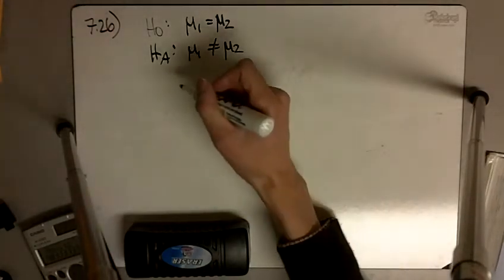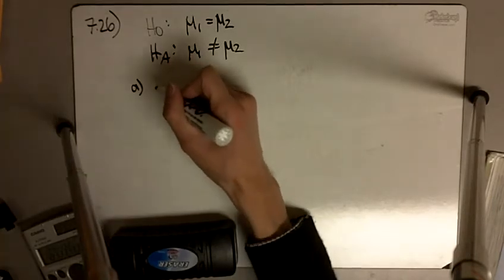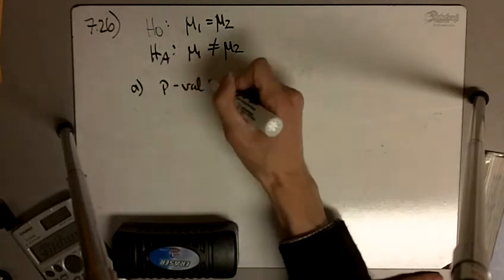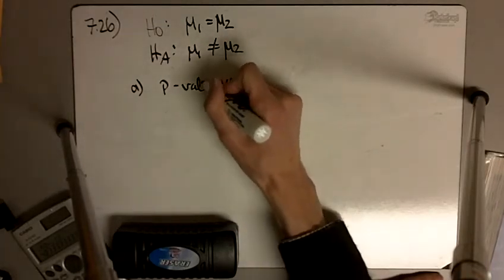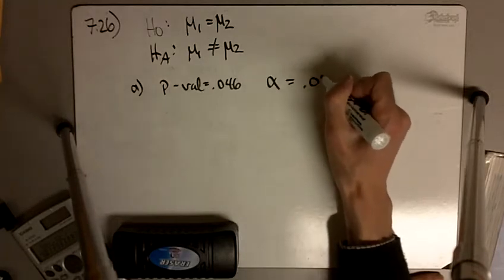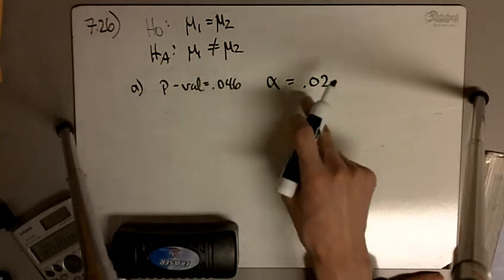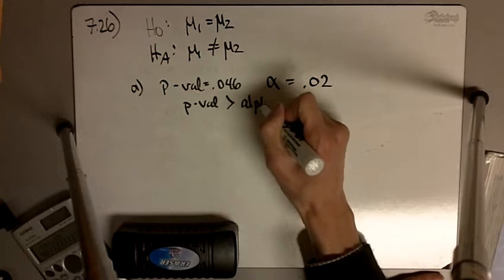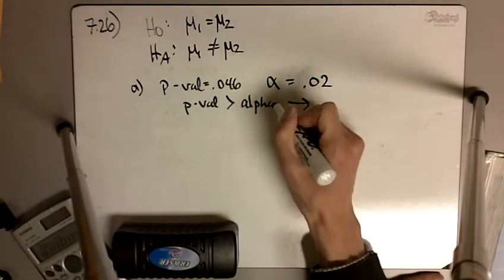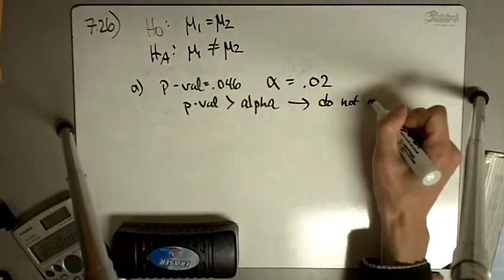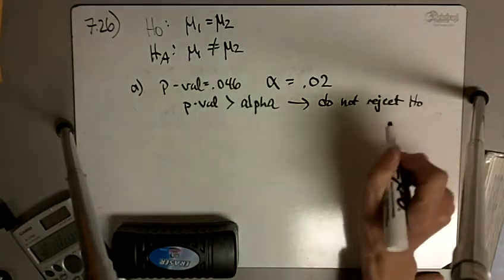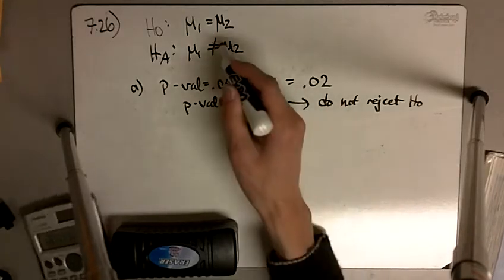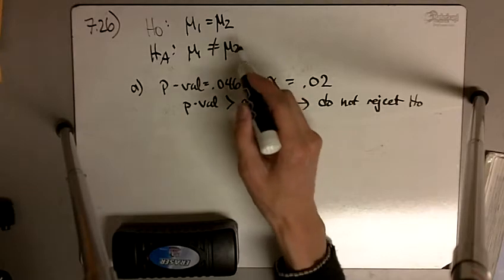Determine whether or not H0 would be rejected. Part A: our p-value is 0.046 and our alpha level is 0.02. Here our p-value is bigger than our alpha, so we do not reject the null hypothesis. We don't have enough evidence — based on the sensitivity of alpha — that μ1 is different from μ2.